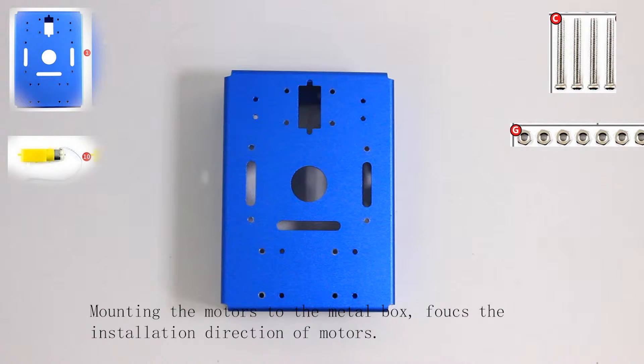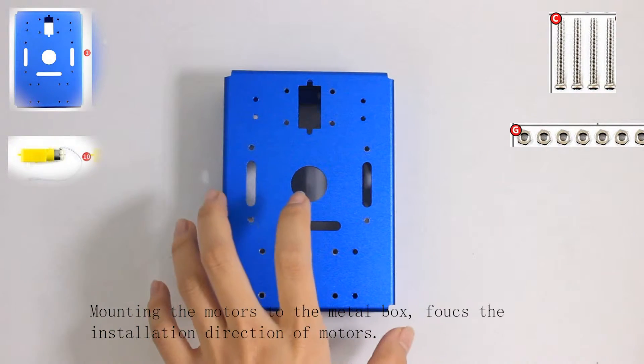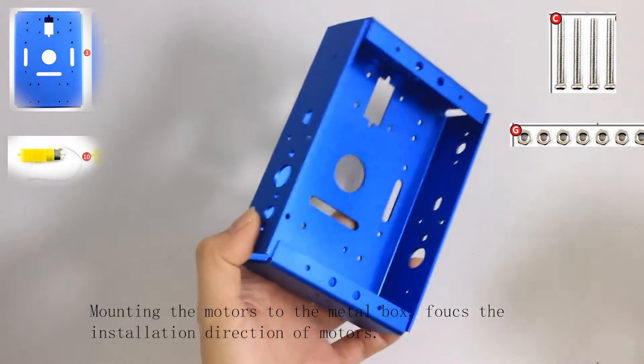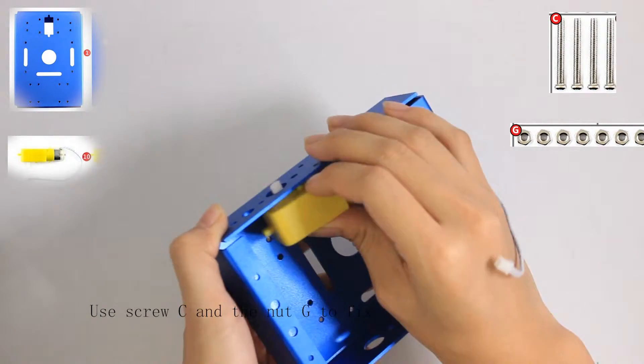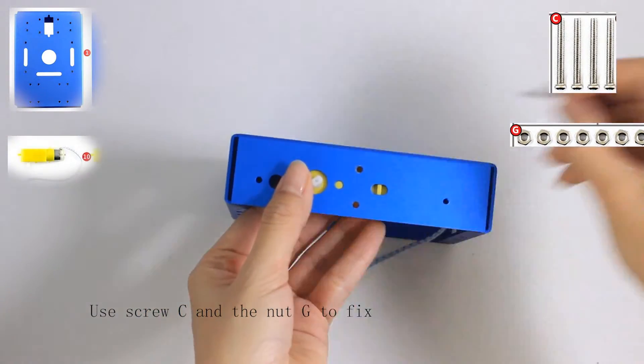First, mounting the motors to the metal box. Please focus the installation direction of motors. Then use screw C and nut G for fixing.